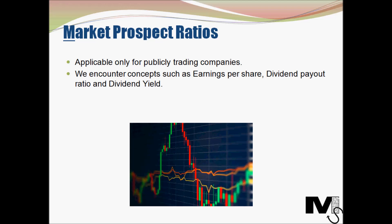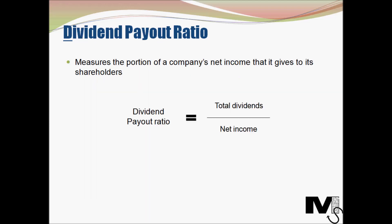Let's look at dividend payout ratio. This ratio measures the portion of a company's net income that it decides to give to its shareholders. The formula is: dividend payout ratio equals total dividends divided by net income. This ratio is of high interest to shareholders, as they want to know the proportion of net income shared with them, and also want to see a trend of dividends against net income over time — helping investors understand at what point in a company's growth cycle they are investing.